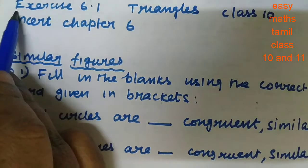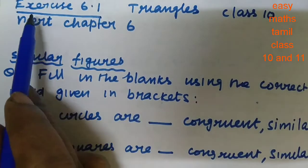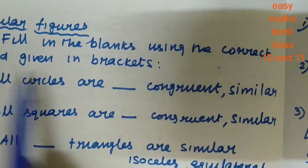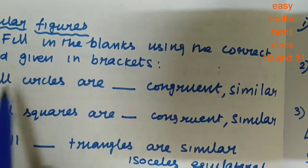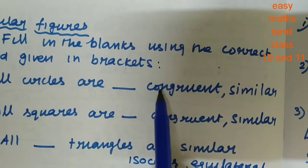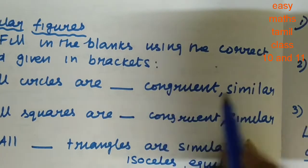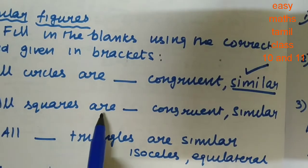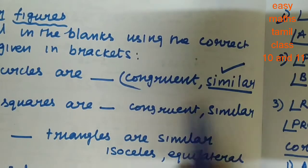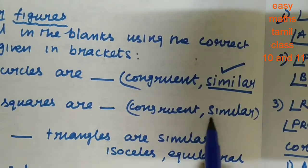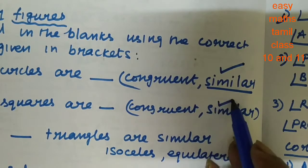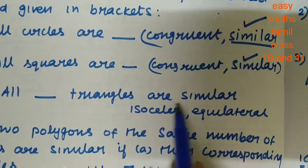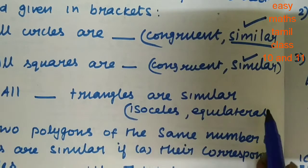Now Exercise 6.1, Similar Figures. Fill in the blanks using the correct word given in brackets. All the circles are — congruent or similar? Similar is the answer. All the squares are — congruent or similar? Similar is the answer.